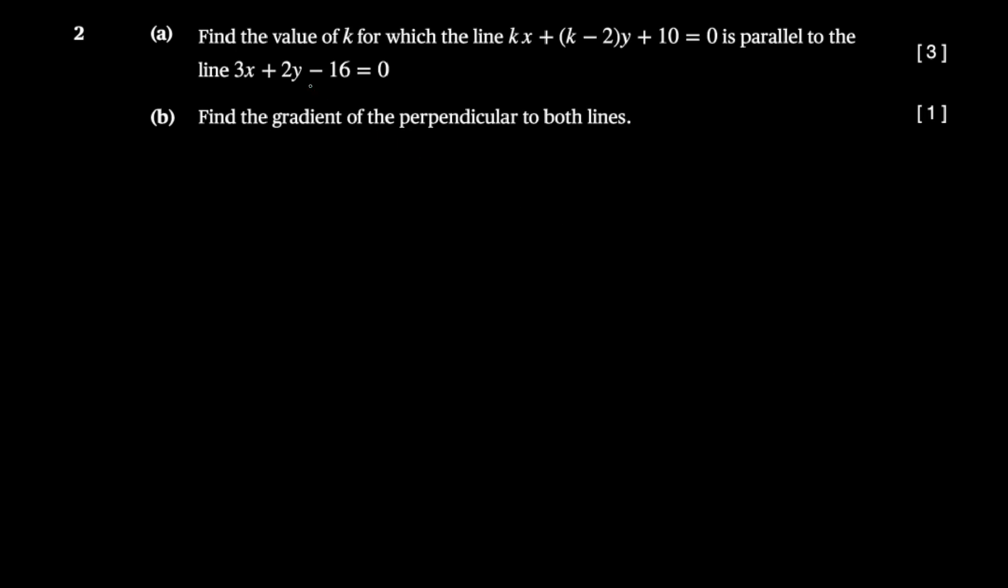The second question says: find the value of k for which the line kx + (k - 2)y + 10 = 0 is parallel to this other line here, which is 3x + 2y - 16 = 0.